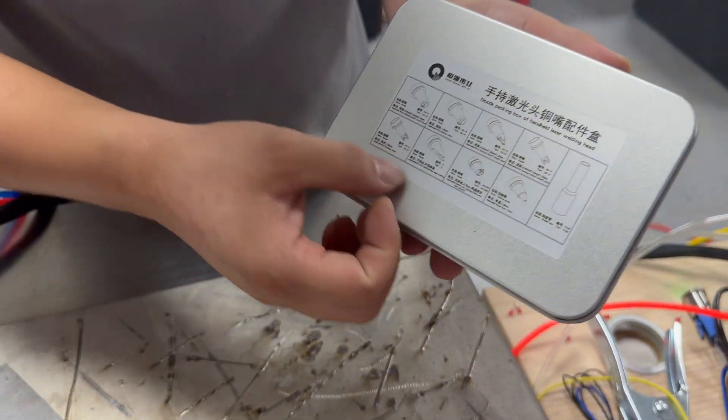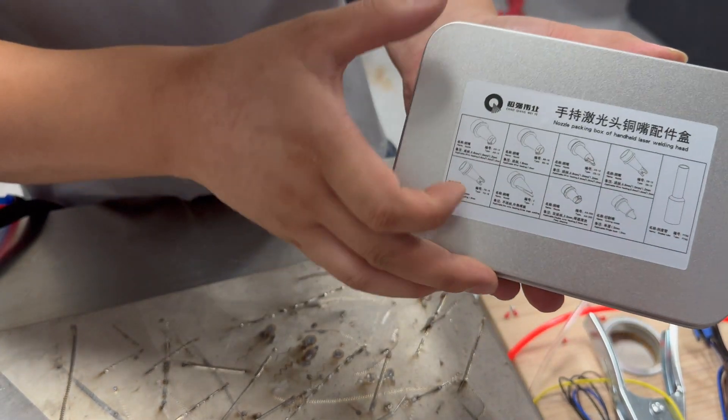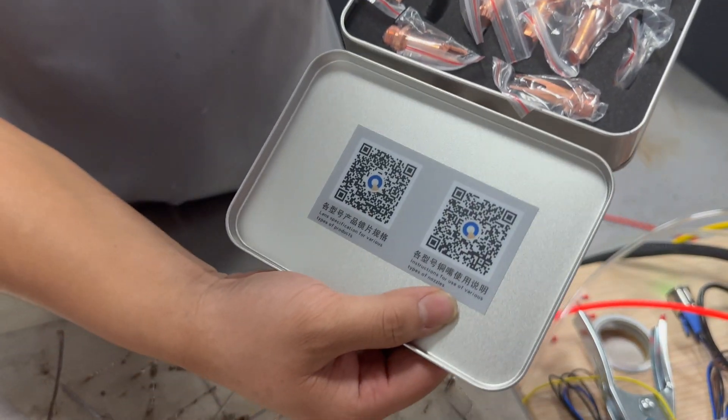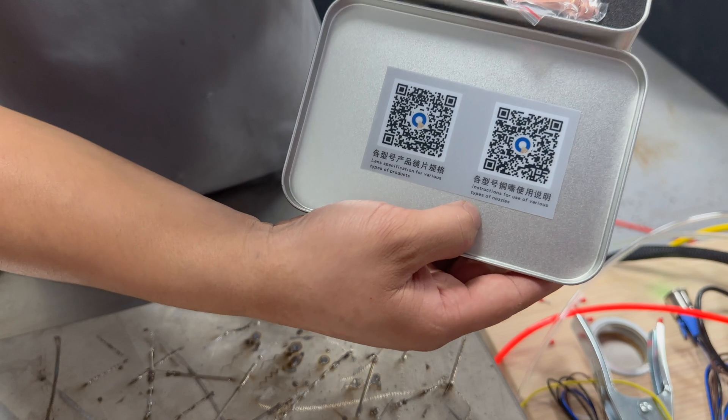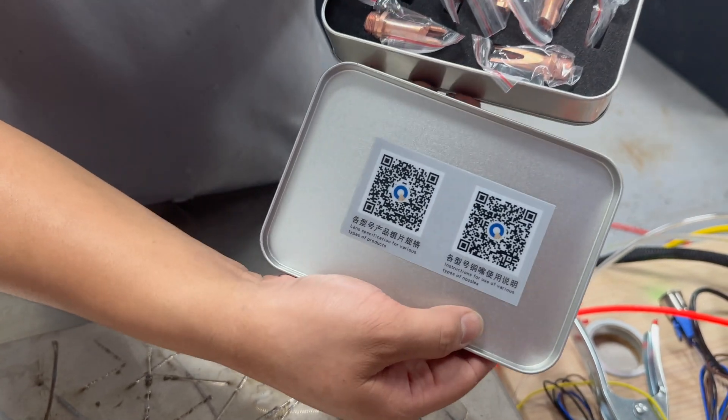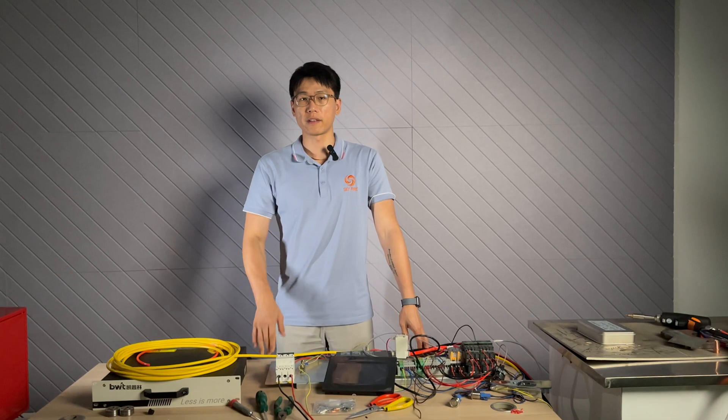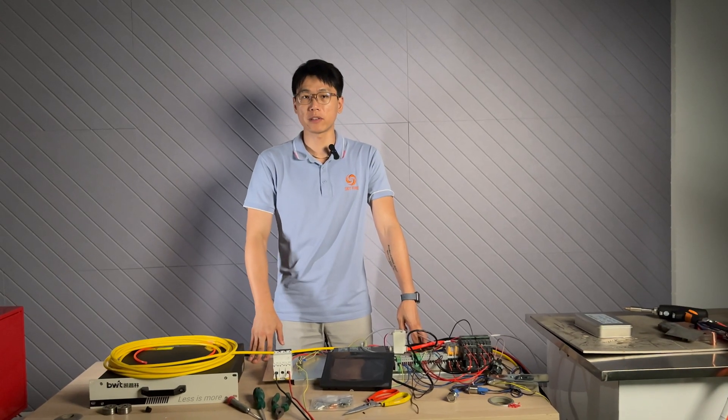Regarding the nozzle, there are very clear markings on it. Also scan the QR code in the back of the box, there will be detailed explanations. Thank you for following along with us this DIY laser welding machine series.